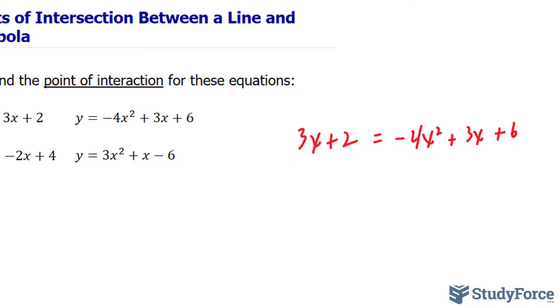Now at this point, all you have to do is solve for X. And there's always three possibilities: either you get two points of intersection, one point of intersection, or no points of intersection.